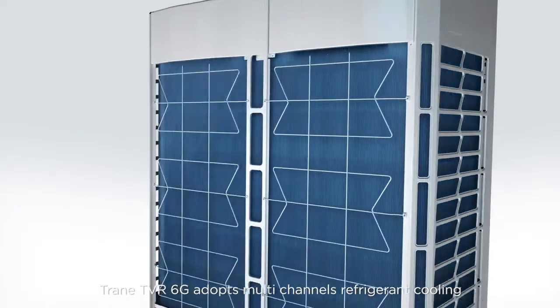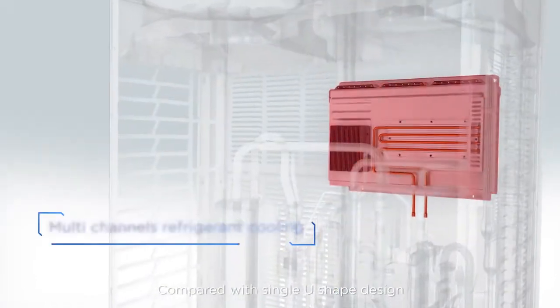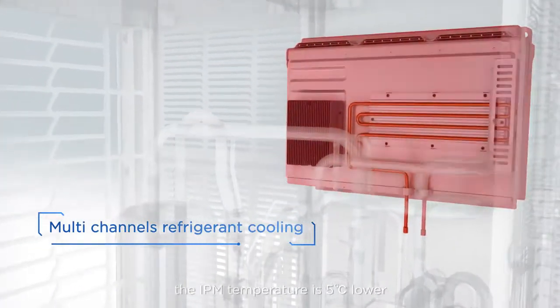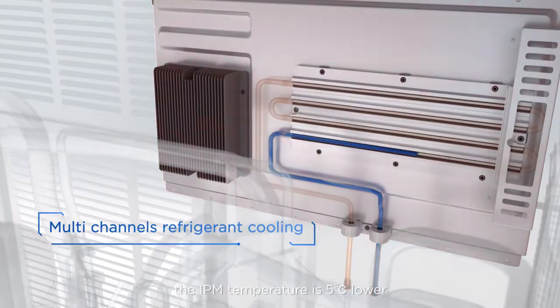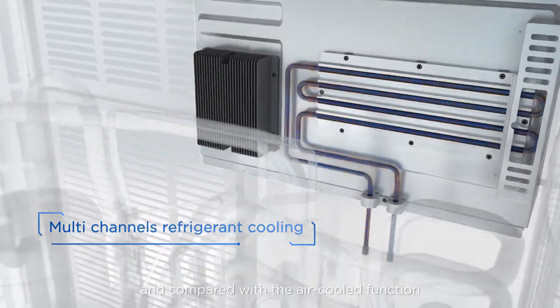TrainTVR 6G adopts multi-channel refrigerant cooling. Compared with single U-shape design, the IPM temperature is 5 degrees Celsius lower and compared with the air-cooled function, IPM temperature is 10 degrees Celsius lower.